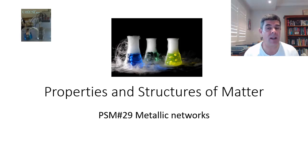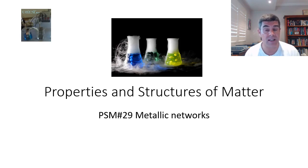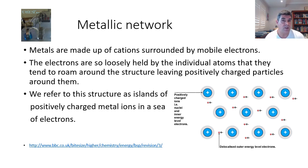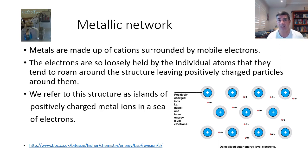Hi students, welcome to Year 11 Chemistry and the properties and structures of matter. This is video number 29 on metallic networks. Metallic networks is really the last of the network groups or solids that we need to look at in terms of their structure and also their properties. We've looked at the ionic solids and the fact that they are a network of ionically bonded cations and anions, of covalent networks which are just a series of covalently bonded atoms, and covalent molecular which are discrete molecules held together by intermolecular forces.